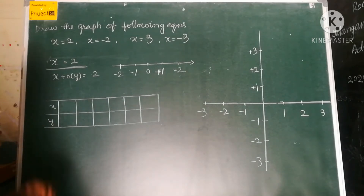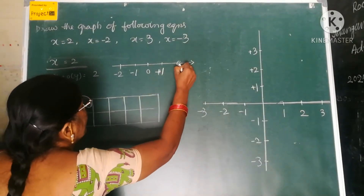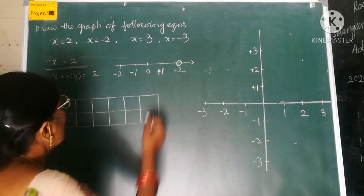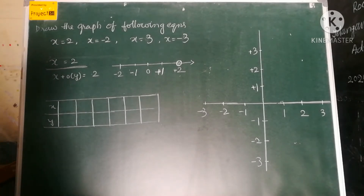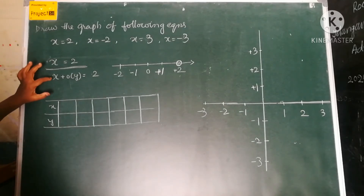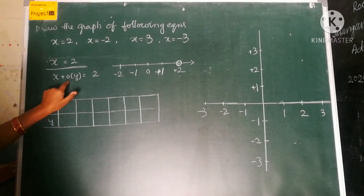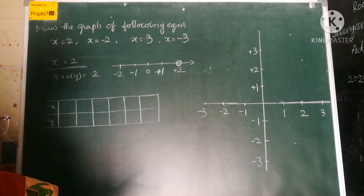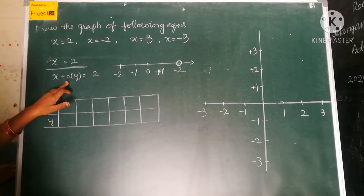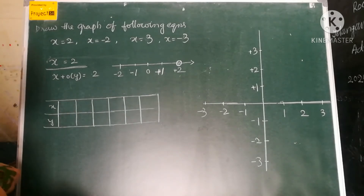Here, x is the only one variable. Now we have to represent this on the number line — this is the place where x is equal to 2. Now let us convert this into a two-variable equation. We will write x as it is, and write 0 into y is equal to 2. We are multiplying y by 0, which means that term equals 0. So it is a representation of a two-variable equation.